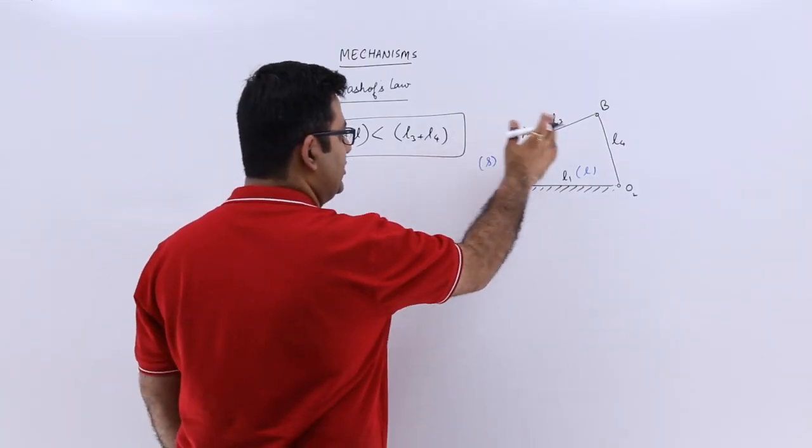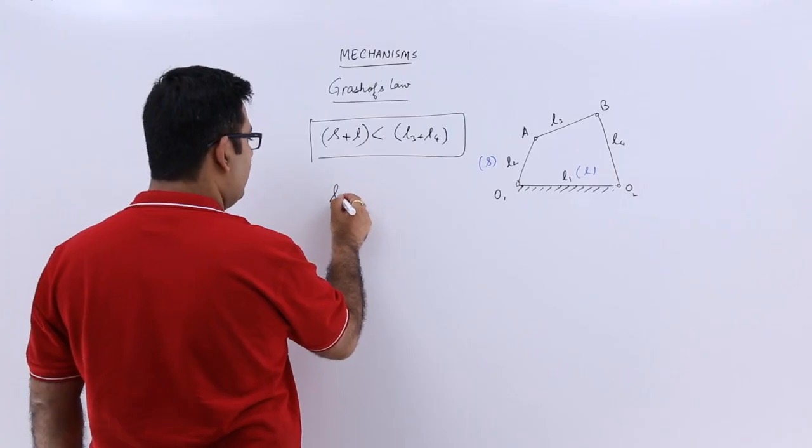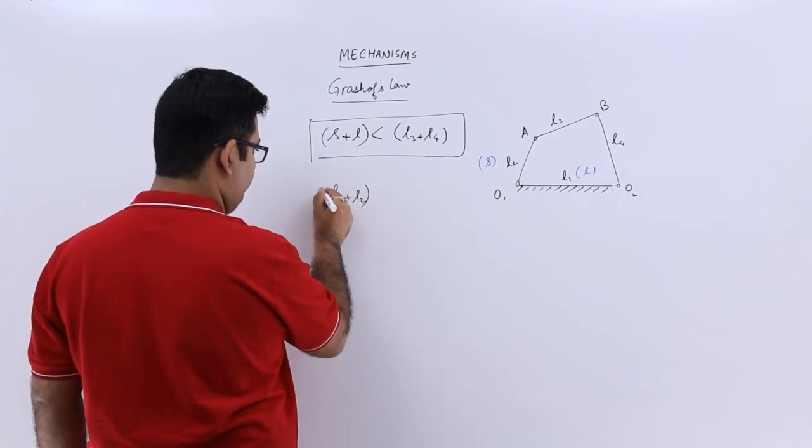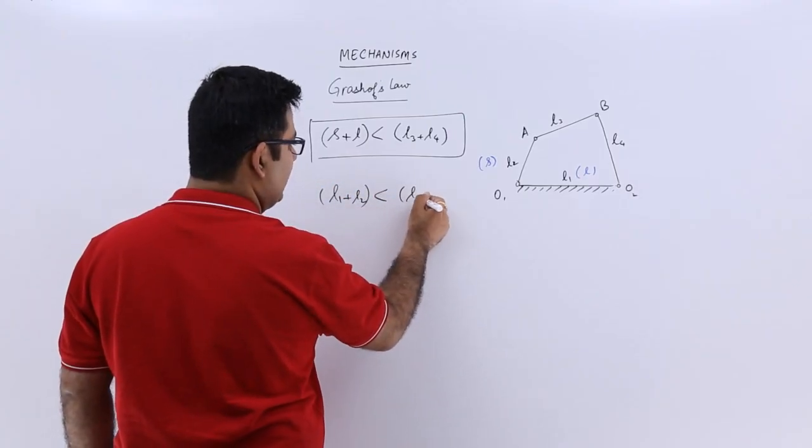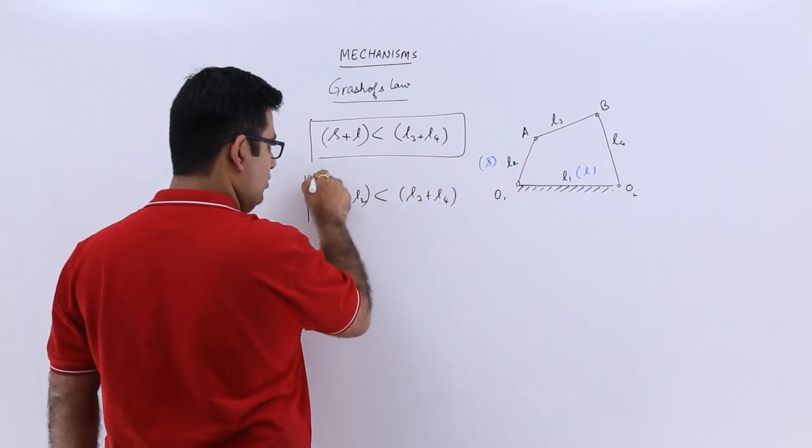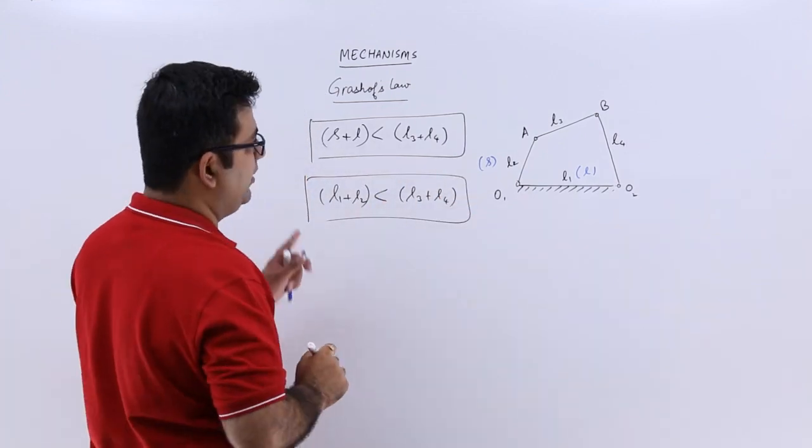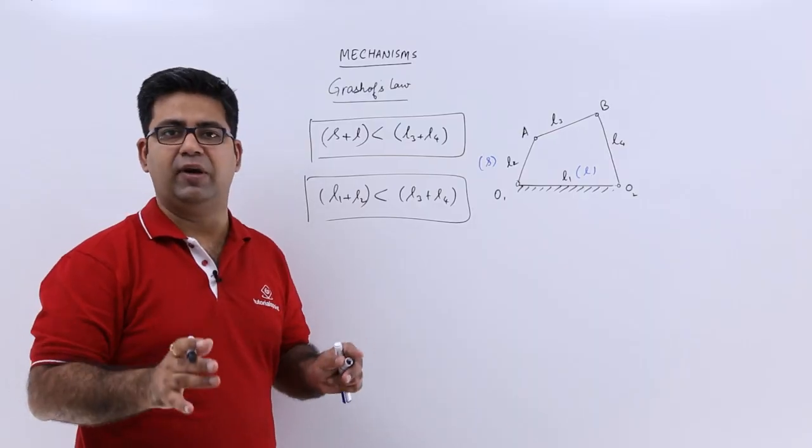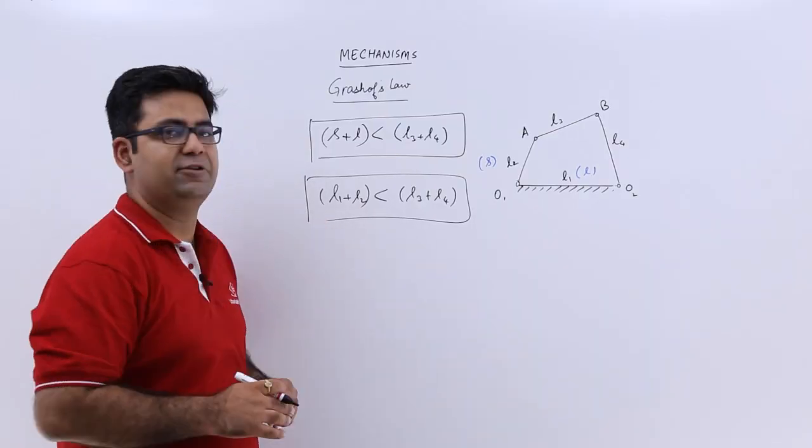So if you go as per this, you will say that l1 plus l2 should be less than l3 plus l4. Just make a note of this. This is all that you need to understand and remember in Grashoff's law.